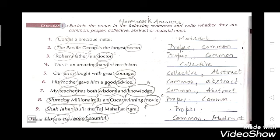First we will do our homework part, then we will do classification of noun. In homework I have given you: encircle the nouns in the following sentences and write whether they are common, proper, collective, abstract, or material noun. See the first one: 'Gold is a precious metal.' Here gold is a material noun.